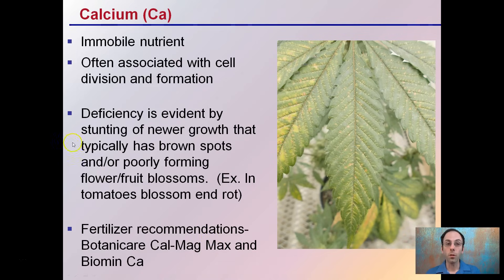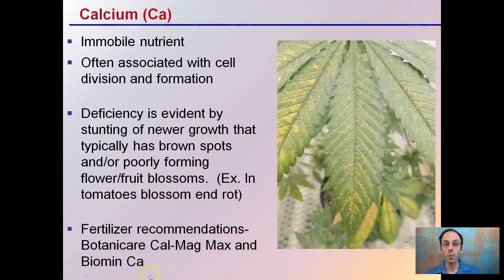Calcium is an immobile nutrient often associated with cell division and formation. Deficiency is evident by stunting of newer growth, which typically has brown spots and poorly forming flowers or blossoms. If you've grown tomatoes, a familiar calcium deficiency symptom is blossom end rot, where calcium simply isn't getting through all the tissue. Botanicaire CalMag Max and Bio Min Calcium are examples of plant-available calcium fertilizers that can help remedy this deficiency.